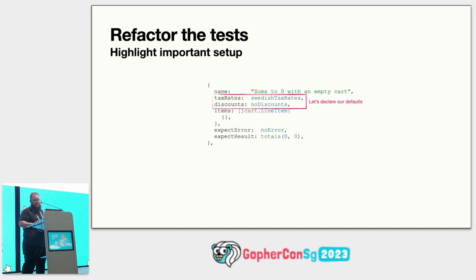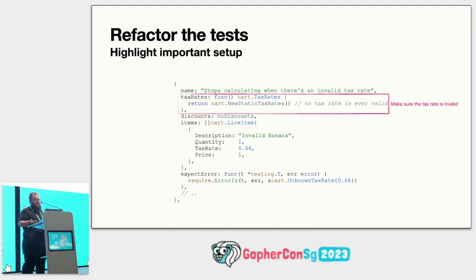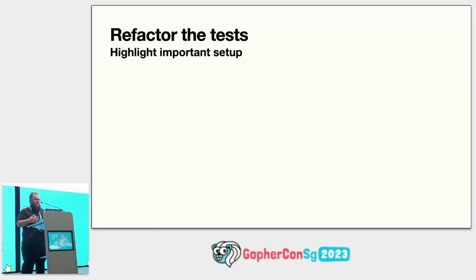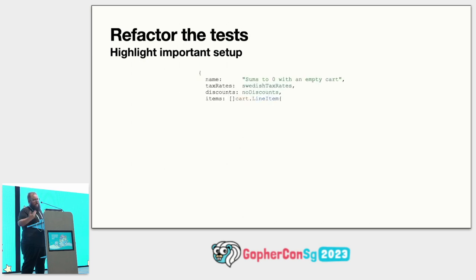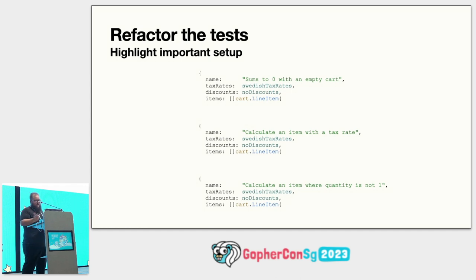I've now named these tax rates — it turns out this is actually Swedish tax rates, because that's where I'm from. And we also have no_discounts. Now I get a nice clarification that we're dealing with tax rates from Sweden and there are currently no discounts. For the test case with a different tax rate, we create an anonymous function at the call site and pass in the value we want. Our tests are now explicitly declaring what they're doing and it's obvious what's going to differ between them. But there's a lot of boilerplate — if we add another collaborator to this calculator, I'd have to update every test. I don't really like that.